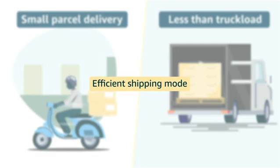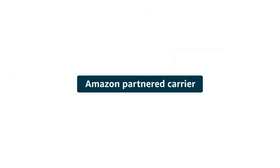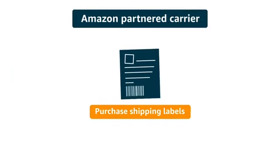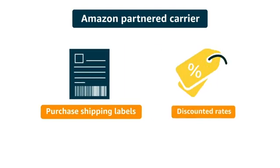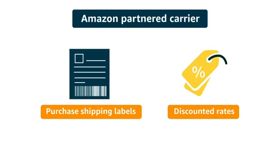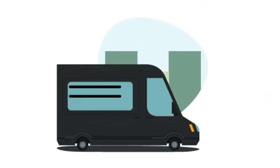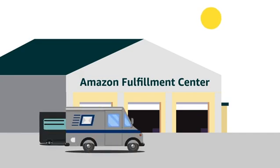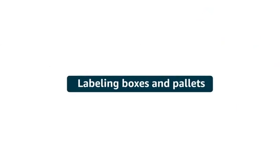Whatever your shipping mode, you can choose to use an Amazon-partnered carrier and purchase your shipping labels directly from within Send to Amazon, taking advantage of deeply discounted shipping rates. However, you are welcome to use any carrier you like to deliver your inventory to Amazon's fulfillment centers.